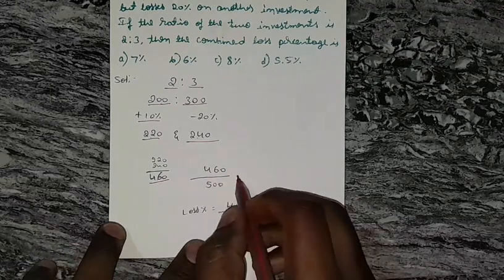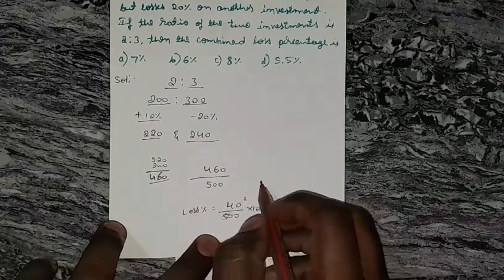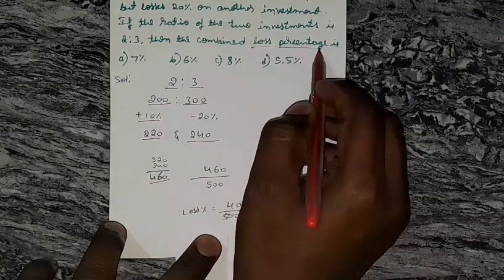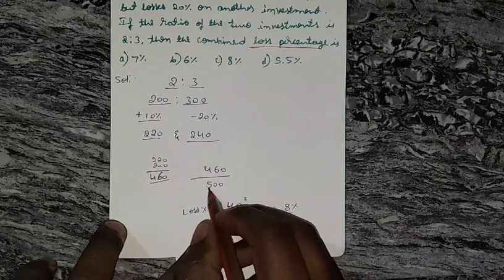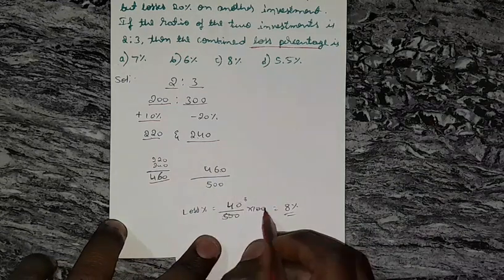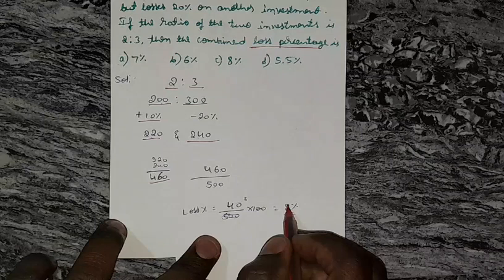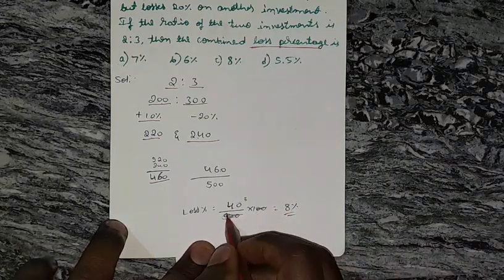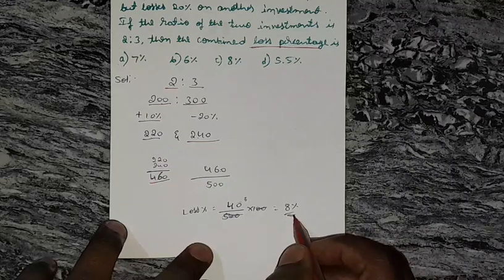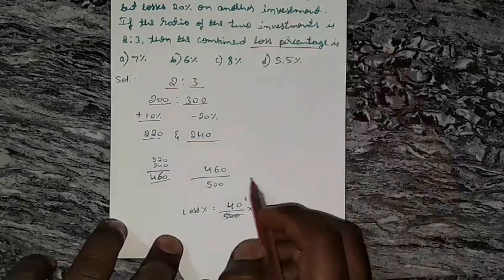Here they are asking loss percentage, so loss is 40. So 40 by 500 into 100, that is 8%. Cancel zeros, 40 by 5 is 8. That is 8% loss you incur by the two investments.